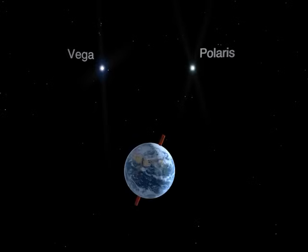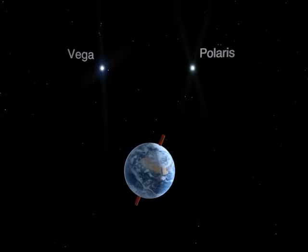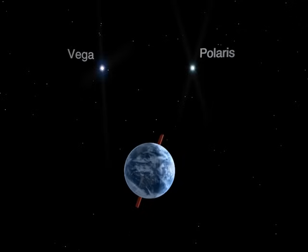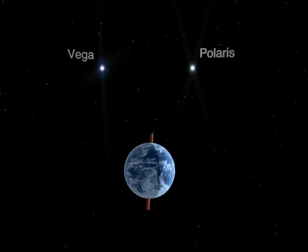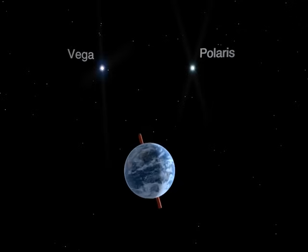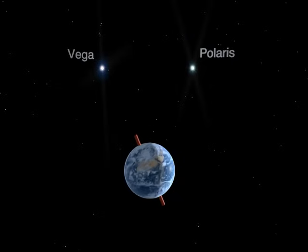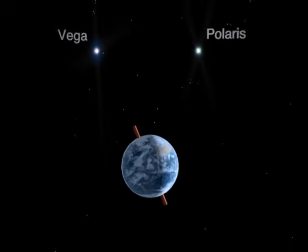In relation to the stars, the Earth's axis currently points toward the star Polaris. Due to the axis of rotation, the Earth's axis will be pointing somewhere near the star Vega in 13,000 years.